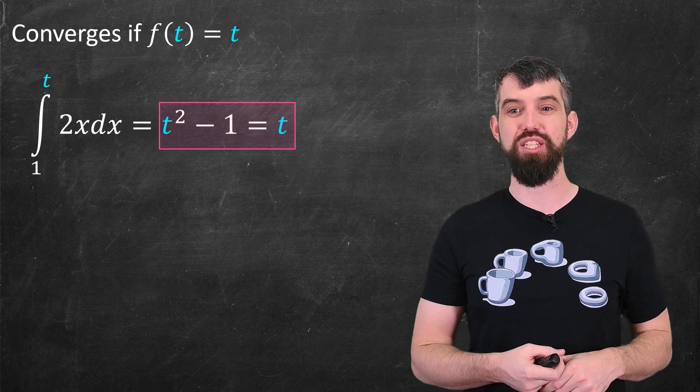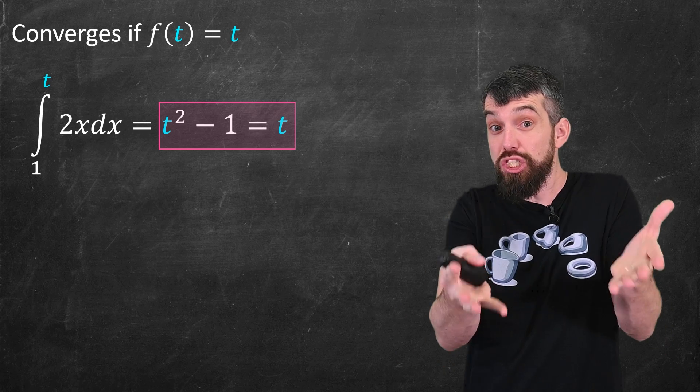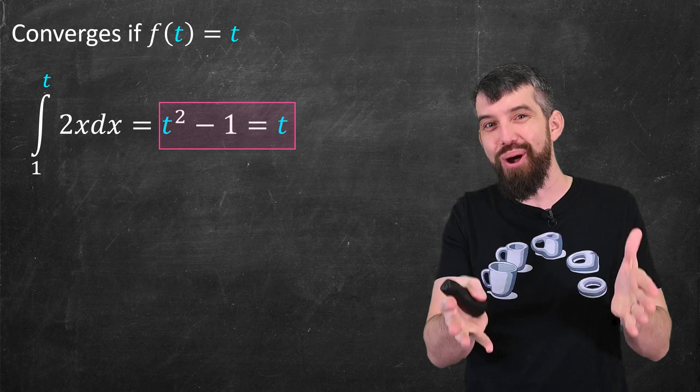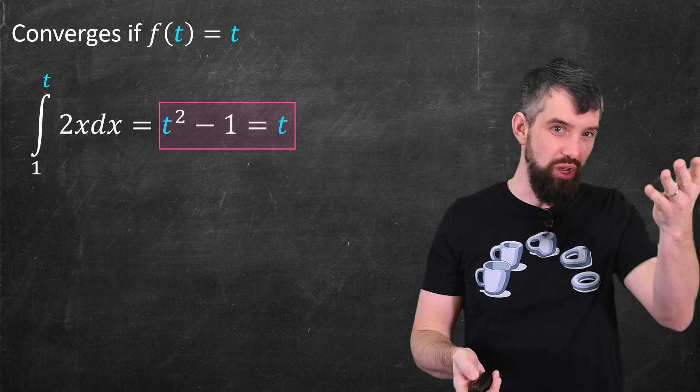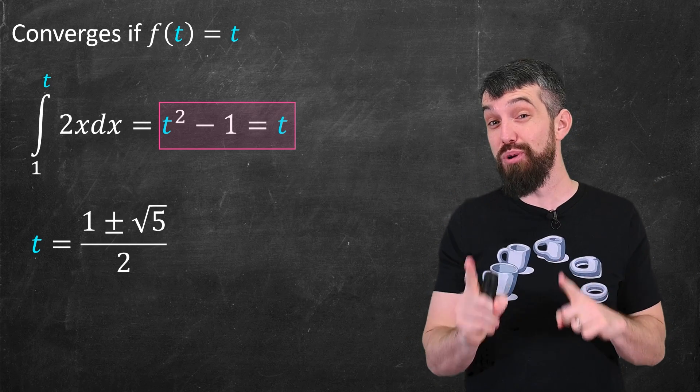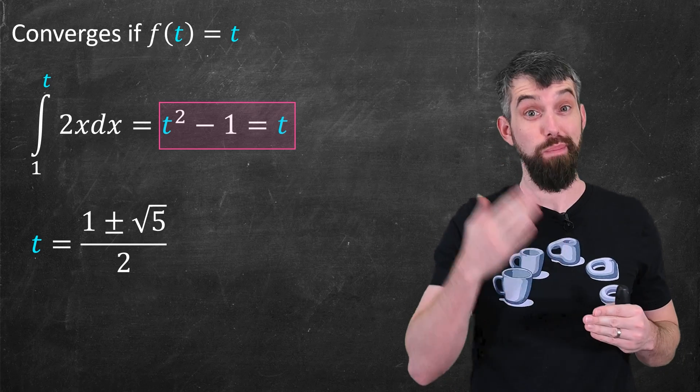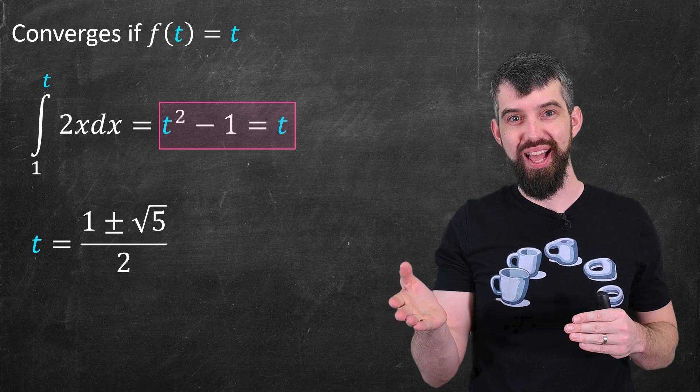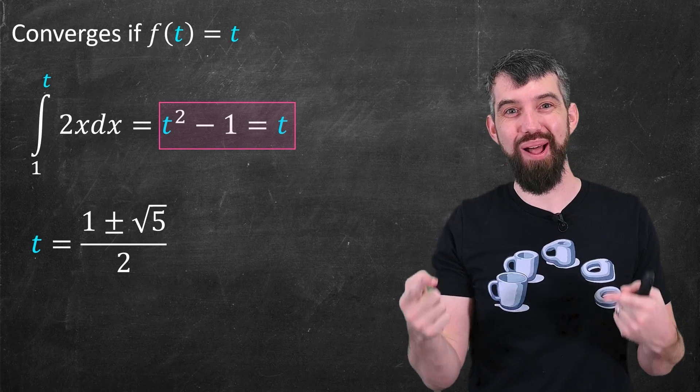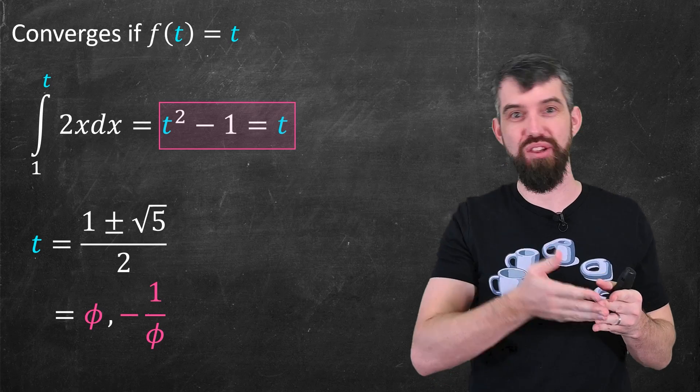And in our specific case, because we're asking the question, is t squared minus one equal to t, that's just a quadratic. So we can solve for the fixed points. Solve the quadratic, you get two different roots. You get one plus or minus the square root of five divided by two. And the positive root of this, one plus square root of five divided by two, that might set off an alarm bell in your mind. That is the golden ratio going by phi, or phi.